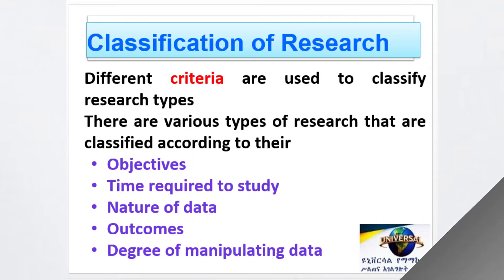There are different criteria used to classify research types. The most common criteria used to classify or differentiate each research type are: first, the objective of the research; second, the time required to study; the nature of data; the outcome of the research; and the degree of data manipulation. These are some of the basic criteria used to classify or differentiate research types.